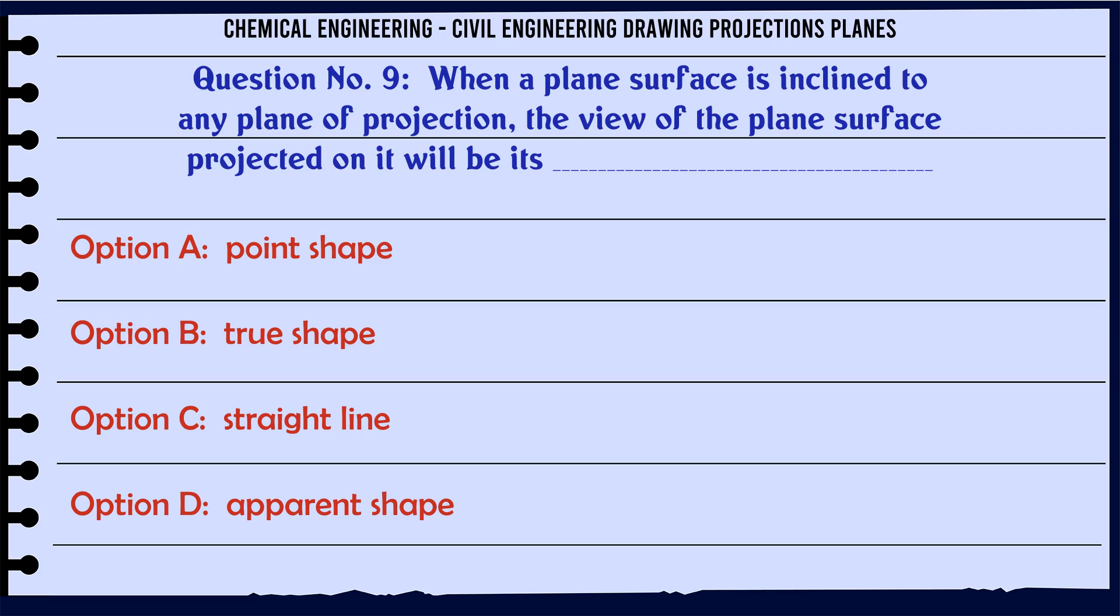When a plane's surface is inclined to any plane of projection, the view of the plane's surface projected on it will be its: A. Point shape, B. True shape, C. Straight line, D. Apparent shape.